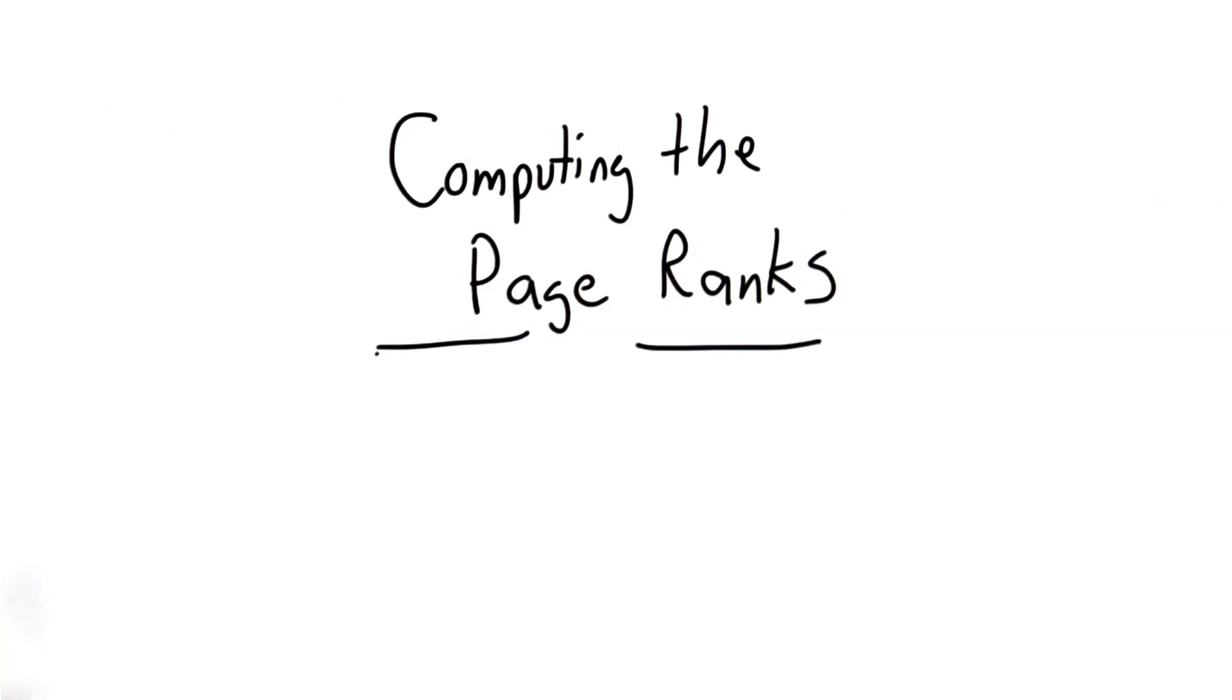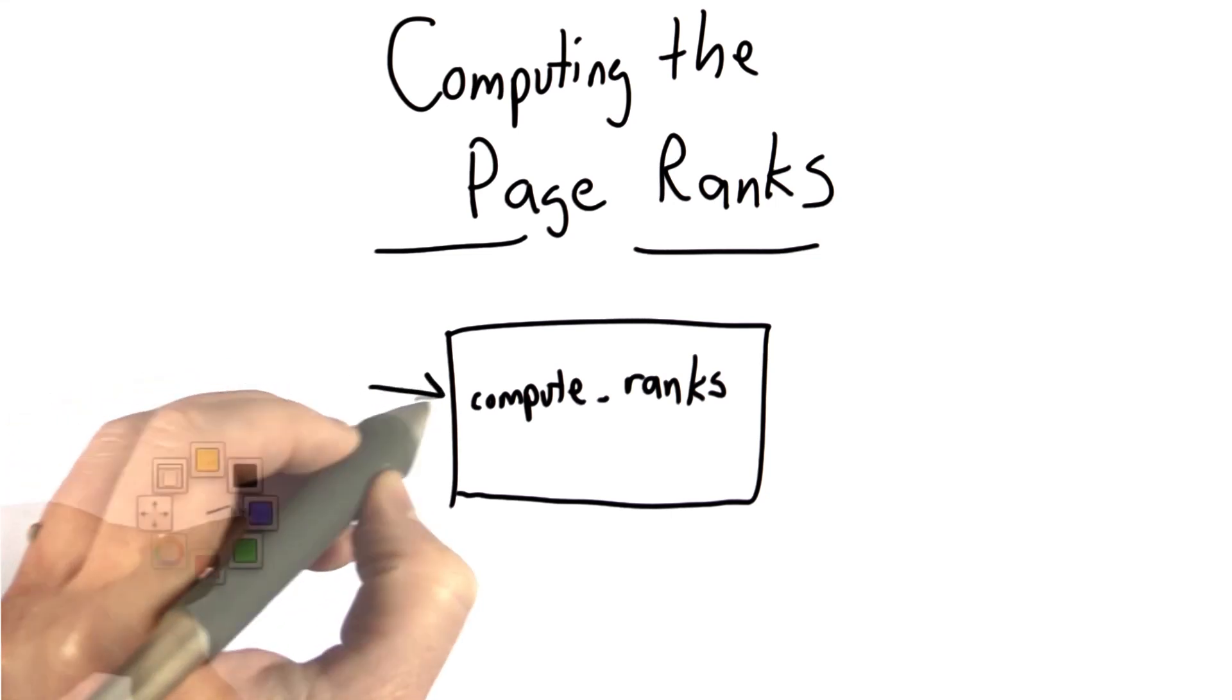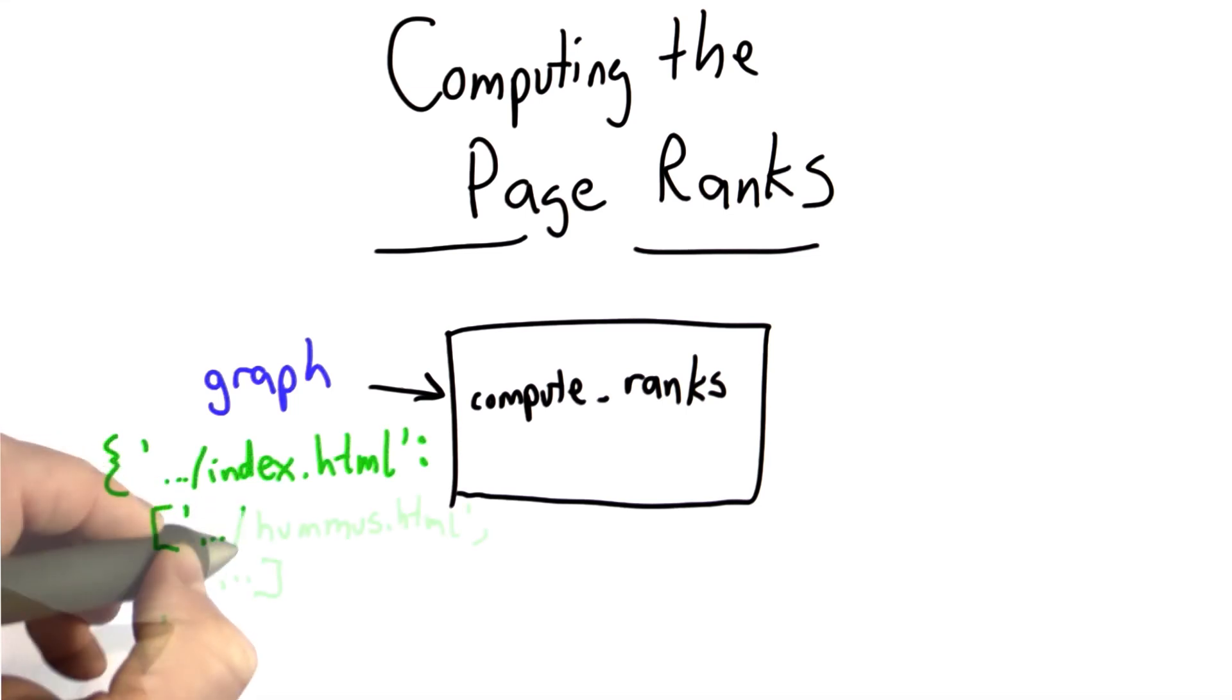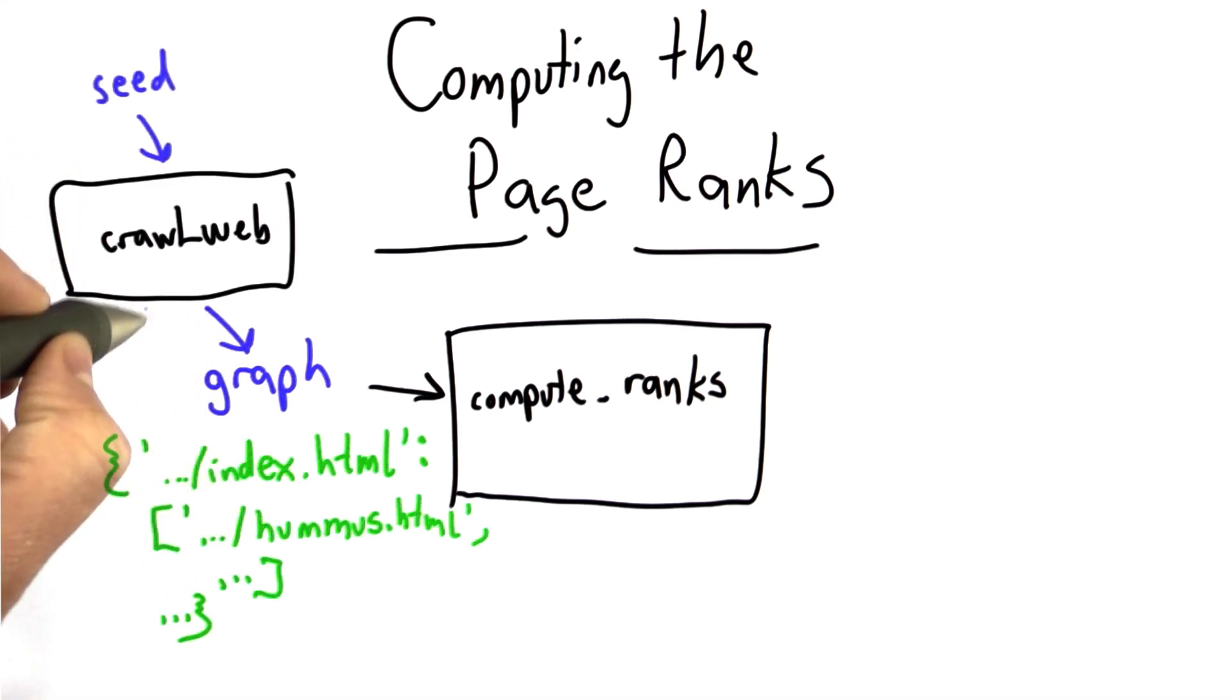So now that we've got the graph, all that's left to do is figure out how to use it to compute the page ranks. So to do that, we'll make a procedure called compute_ranks. It takes as input a graph that gives the link structure. So as an example, we have our graph that has the URLs and each URL followed by the list of pages that it links to. And this is the graph that was produced by our crawler. And crawl_web produced as outputs a graph as well as an index. We're going to use the graph as the input to compute_ranks.